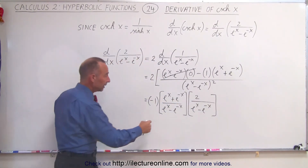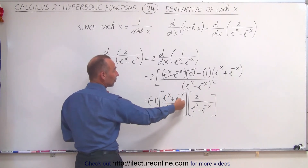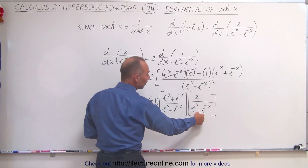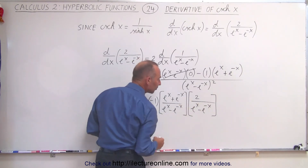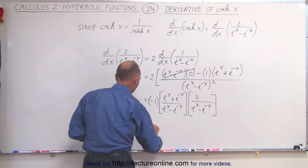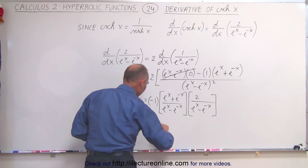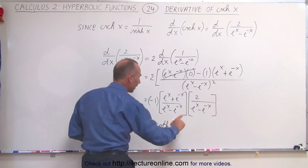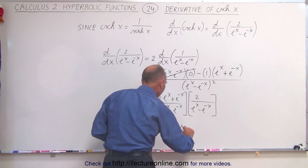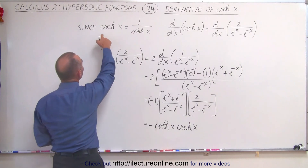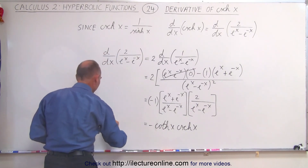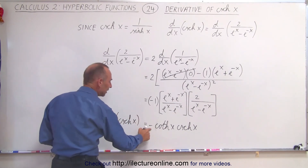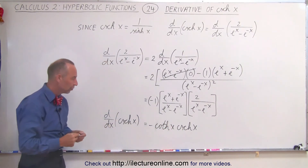Notice carefully that this is essentially the hyperbolic cosine over the hyperbolic sine, so this is actually the hyperbolic cotangent. And this is the inverse of the hyperbolic sine, so this becomes the hyperbolic cosecant. With the negative sign, this becomes minus the hyperbolic cotangent of x times the hyperbolic cosecant of x.